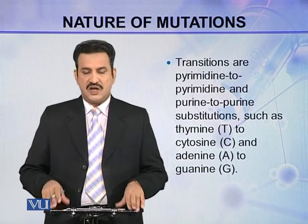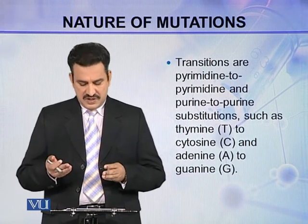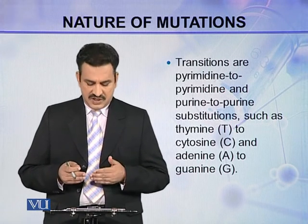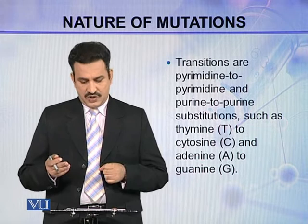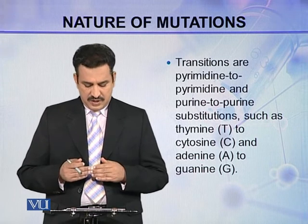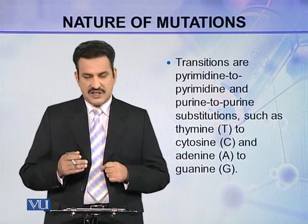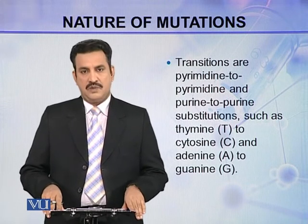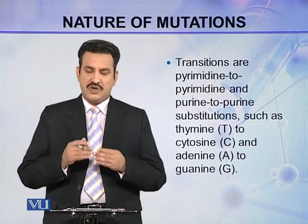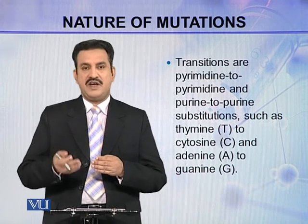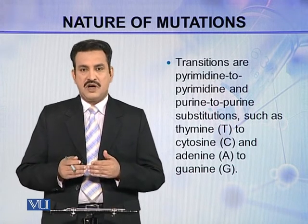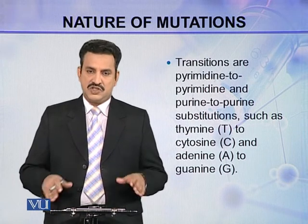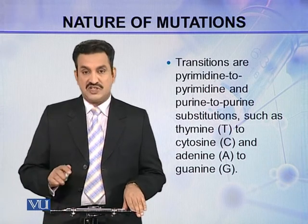Transitions are pyrimidine to pyrimidine and purine to purine substitutions, such as thymine to cytosine — both are pyrimidines — and adenine to guanine — both are purines. So a purine is replaced by another purine, or a pyrimidine is replaced by another pyrimidine. Such changes are called transitions.